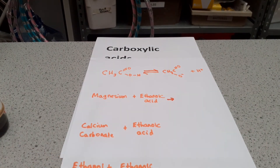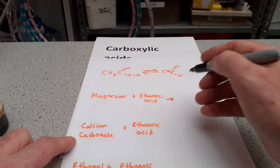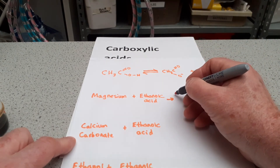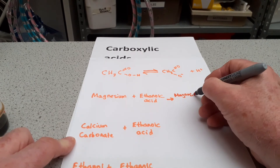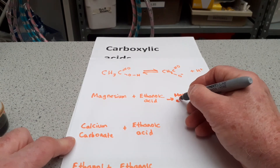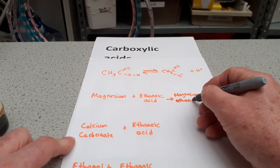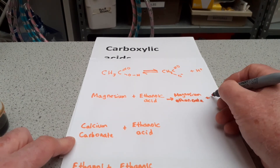We did magnesium with ethanoic acid, and we said it will form a salt plus hydrogen. The name of the salt comes from the metal — so if we're reacting magnesium with ethanoic acid, the salt starts with magnesium. From the acid, we take the '-ic' off and add '-ate', giving us magnesium ethanoate plus hydrogen.